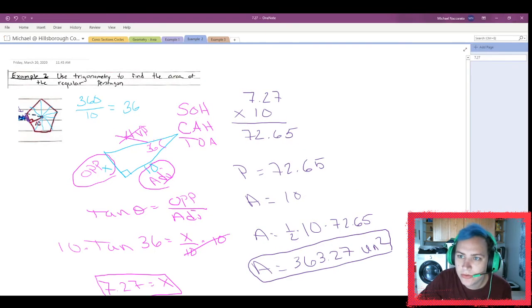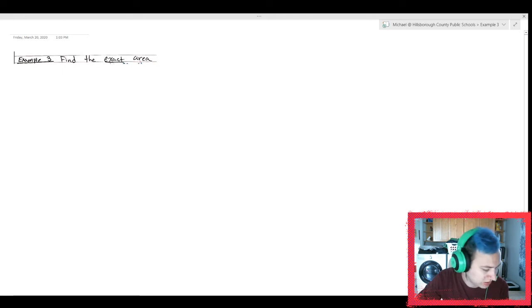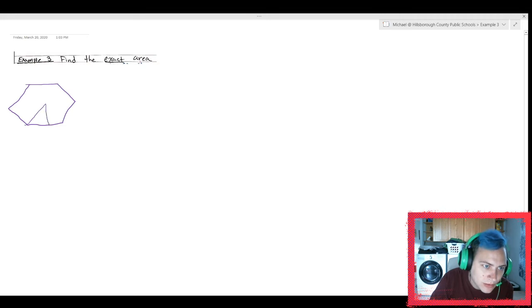One last example for our notes. This one, the picture of my notes is super ugly, so I'm redoing it. So it was a hexagon. In this one what happens is we know that the outside, the entire length of the outside is 22 units. And they asked me to find the exact area. That's an important word. I wonder why they said that.